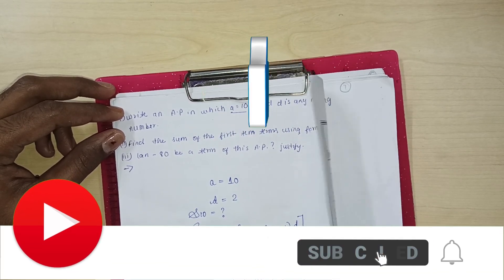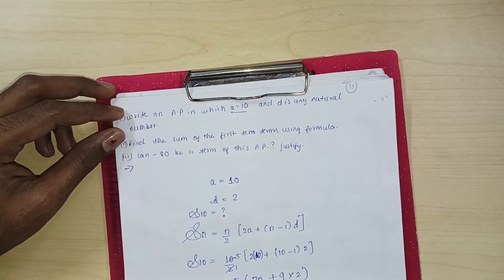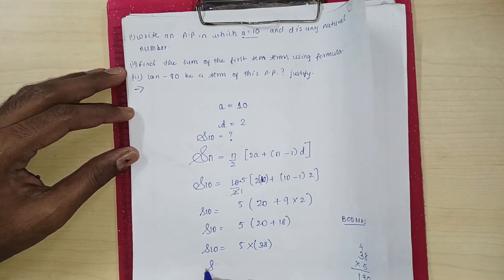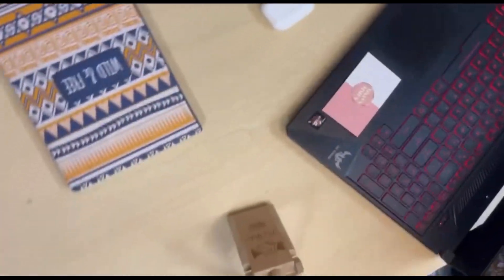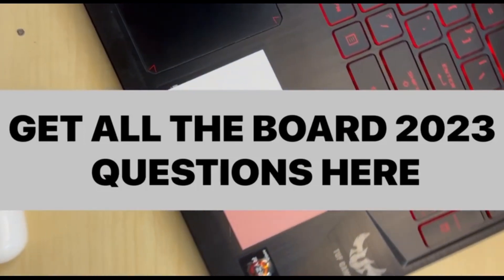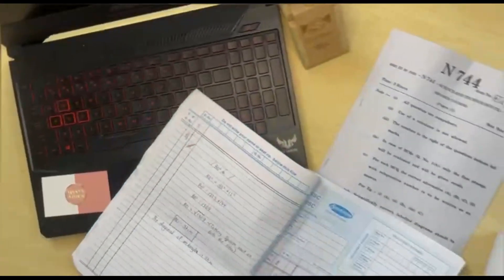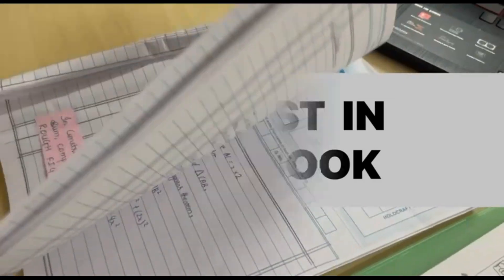20 plus 18 is nothing but 38. How do you multiply with 5? 5 times 8 is 40, 5 times 3 is 15 plus 4 is 19. The answer is 190.